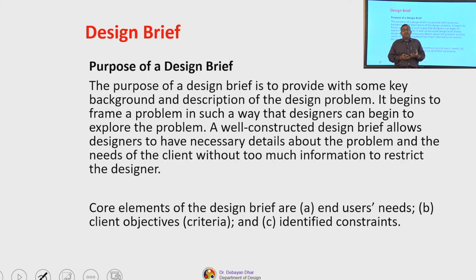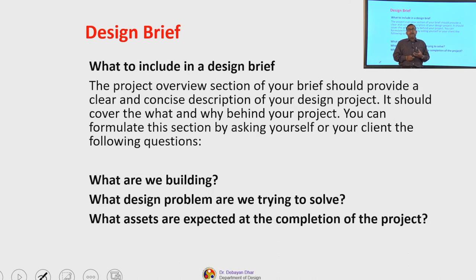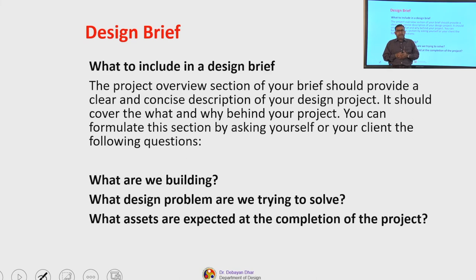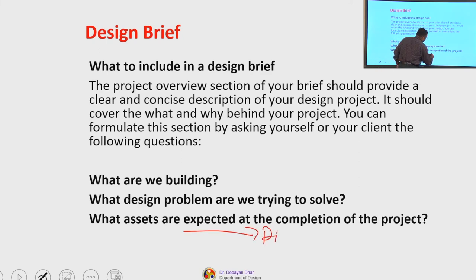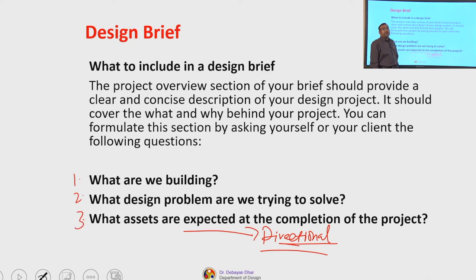The core elements of a design brief are: first, defining end users' needs; then the client objectives; and finally, the identified constraints. The project overview section of your brief should provide a clear and concise description of your design project — covering the what and why behind it. You can formulate this section by asking: what are we building? What design problem are we trying to solve? What assets are expected at the completion of the project?